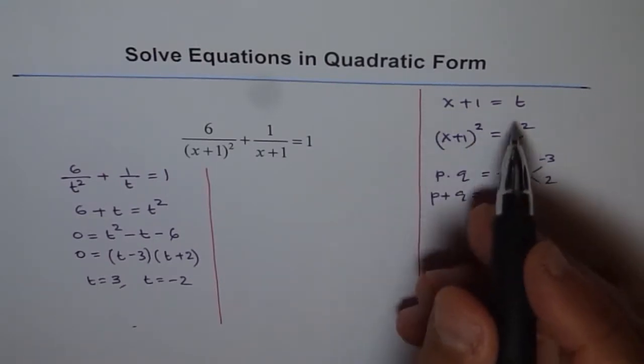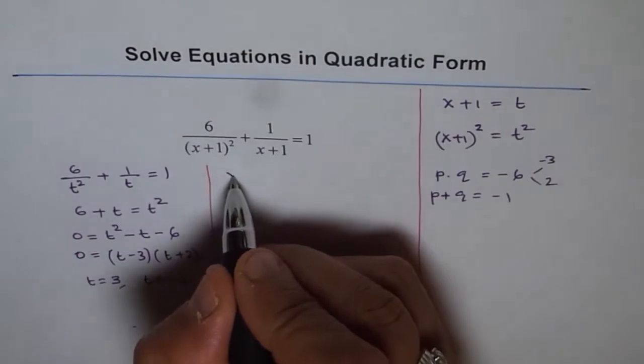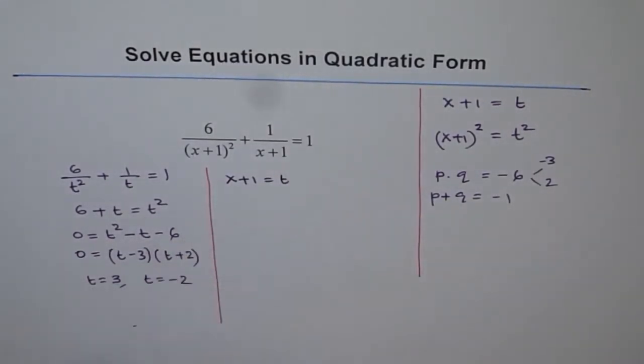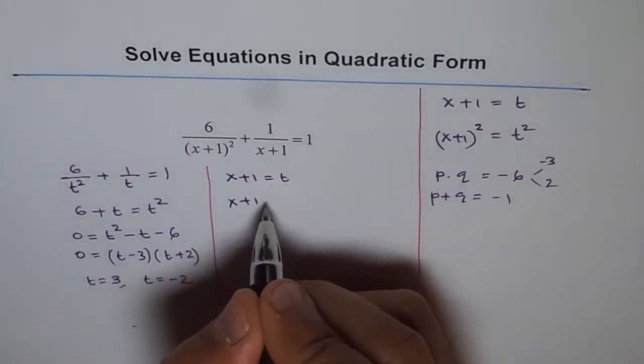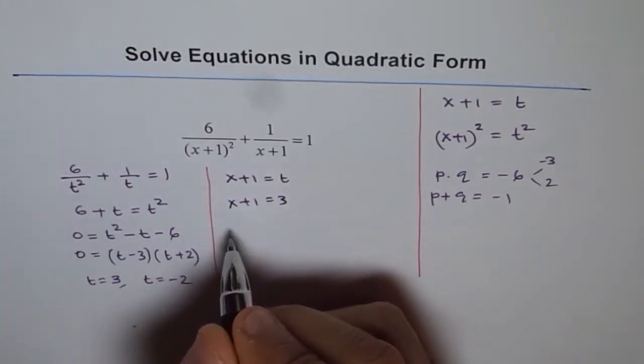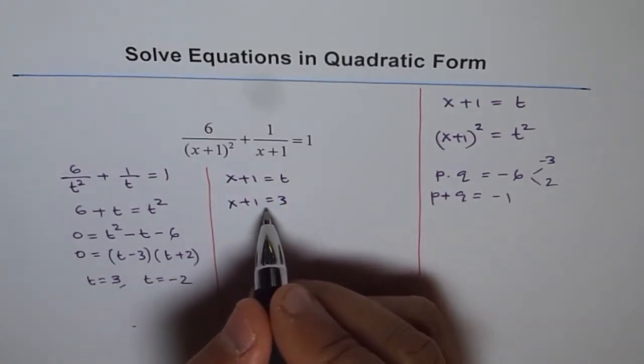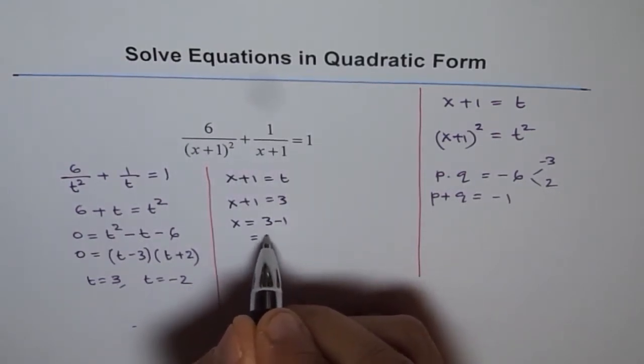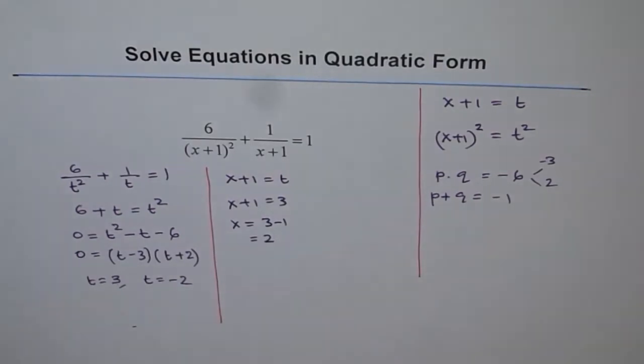So x plus 1 is t. So we know x plus 1 equals t. Now t is 3 for us. That means x plus 1 equals 3 and so x is equal to 3 minus 1. So x equals 3 minus 1 which is 2. That is one solution.